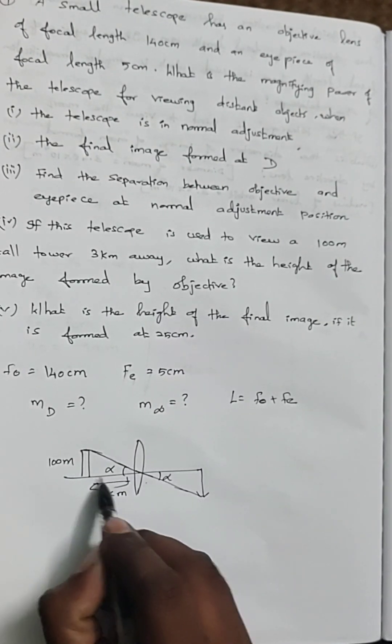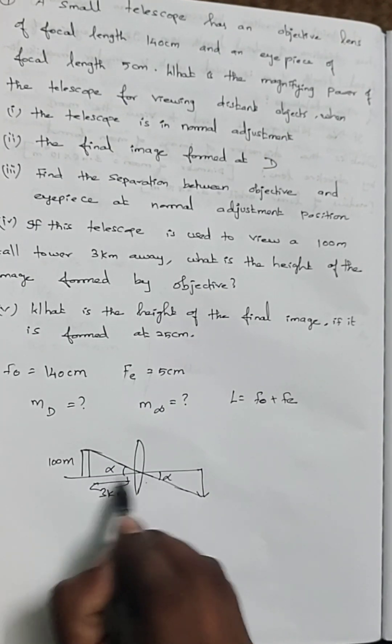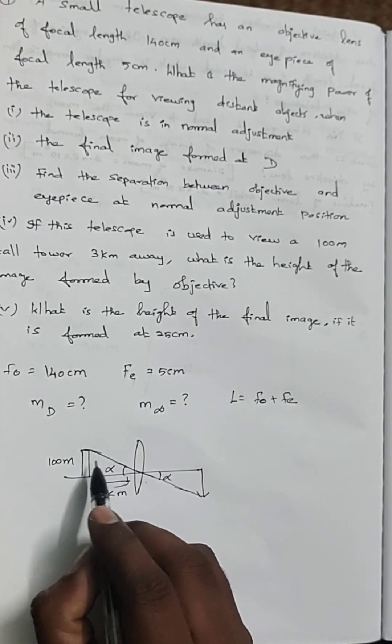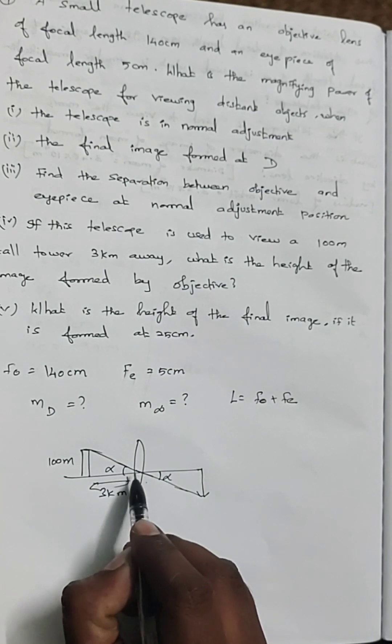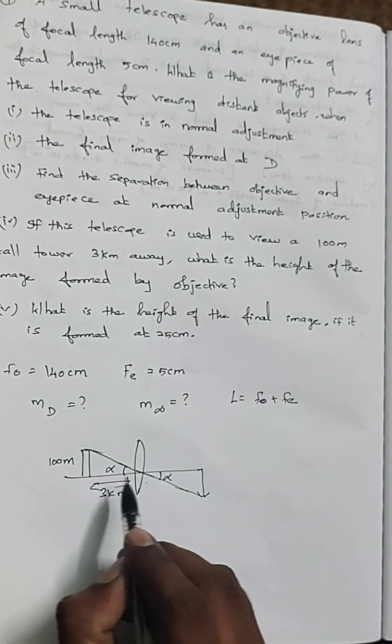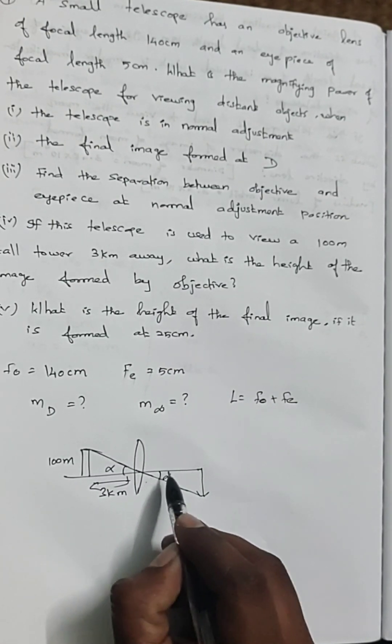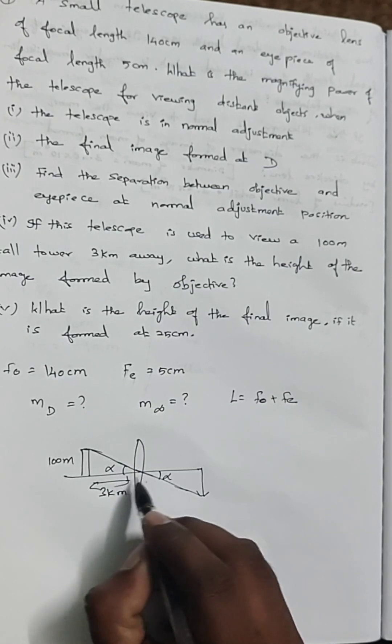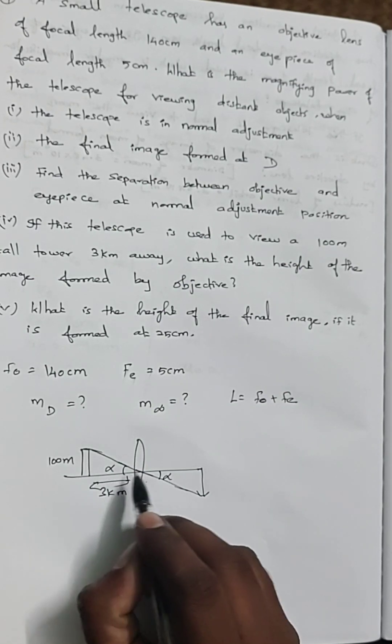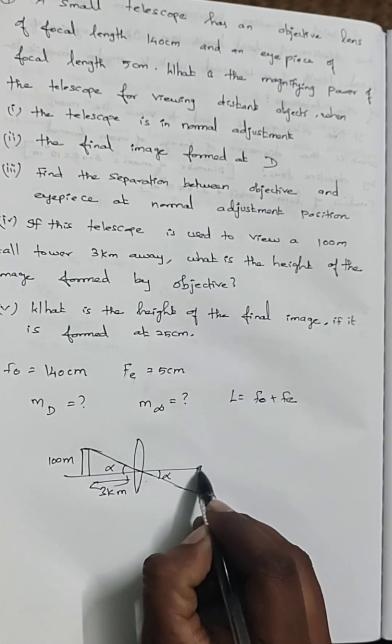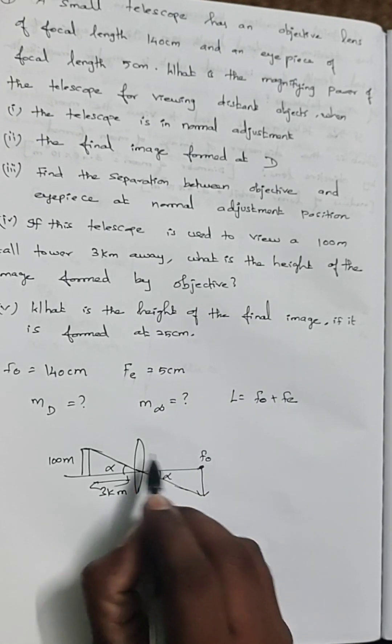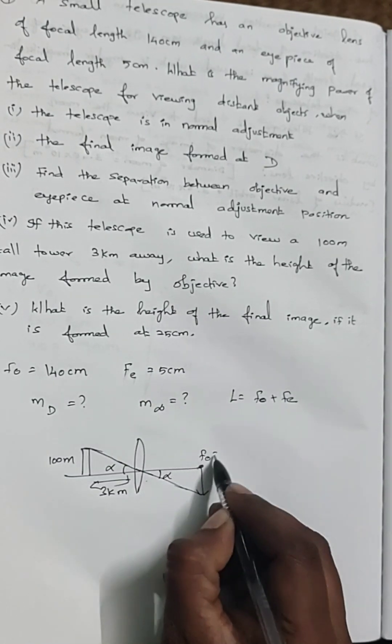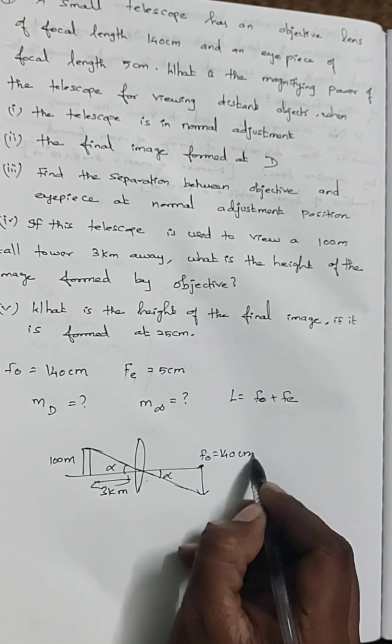When an object is placed at a very long distance compared to the focal length, we consider the object is at infinity. When the object is at infinity, the image will form at the focal point. This point will be the focal point, so focal point equals 140 centimeter.